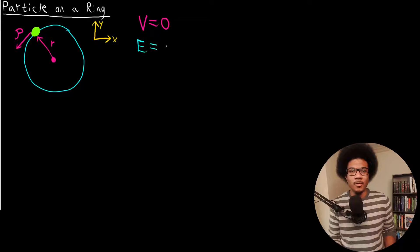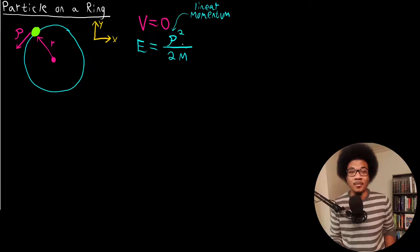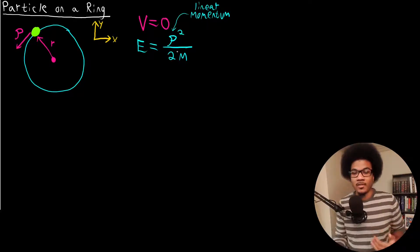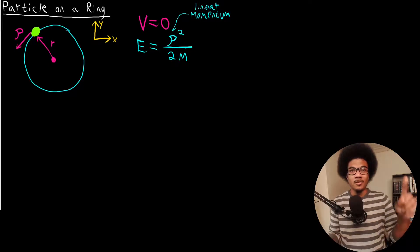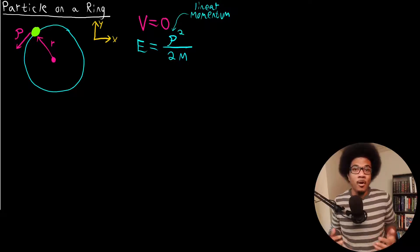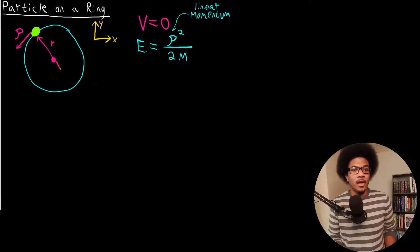That means the only contribution to the total energy is the kinetic energy of this particle. So the energy would just be the square of the momentum over 2m. Rho is our linear momentum — that's going to be a clear distinction here. This is the particle's linear momentum, and this will be its kinetic energy contribution. But in the case of something traveling in circular motion, linear momentum is not going to be the most relevant momentum for a particle traveling in a circle.